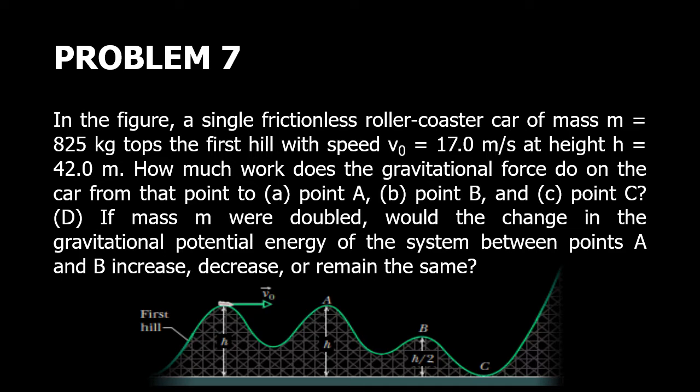So we have our problem here. In the figure, a single frictionless roller coaster car of mass m = 8.25 kilograms tops a hill with speed v_0 = 17.0 meters per second at height 42 meters. How much work does the gravitational force do on the car from point A to point B to point C?